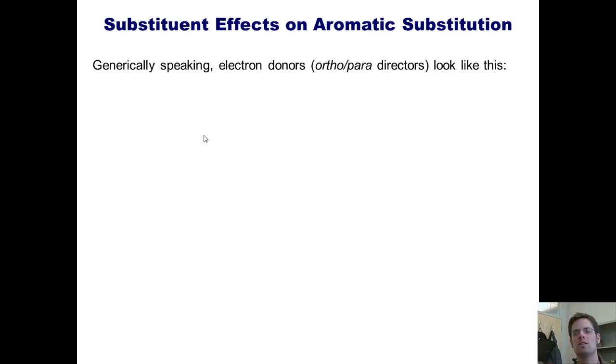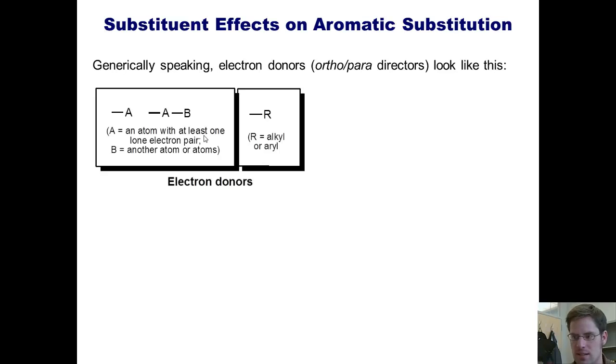Now we'll return to our donors. Remember that, generically speaking, donating groups, which are ortho-para directors, look like this. They are either alkyl or aryl groups, or they're atoms immediately bonded to the benzene ring that have at least one lone pair of electrons on them. You can also have atoms that are immediately bonded to a benzene ring that are bonded to other atoms that aren't more electronegative than they.